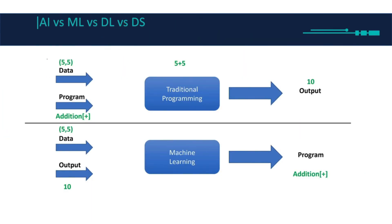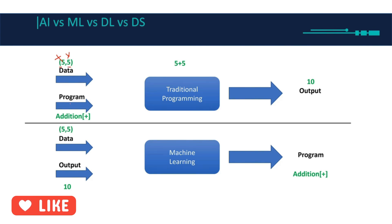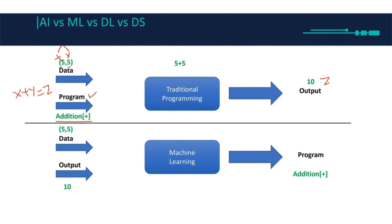Let's make a smaller example. I have two numbers, x and y — both are 5. In traditional programming, I write an addition program: x plus y equals z, so the output z is 10. Simple. In machine learning, I always give the data, but instead of giving the program, I give the output — which is 10.